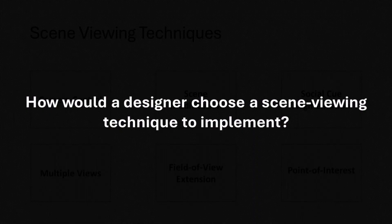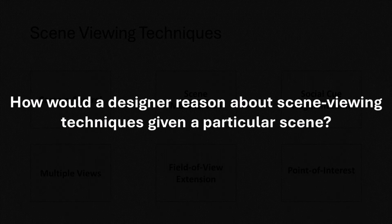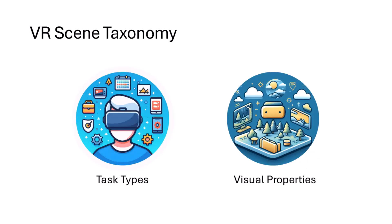However, despite the abundance of scene viewing technique research, the question remains: how would a designer choose a scene viewing technique to implement? And more generally, how would a designer reason about scene viewing techniques given a particular scene? To facilitate the selection of appropriate scene viewing techniques, we devised a scene taxonomy derived from insights into cognitive psychology and computer vision on how people and computers define, view, and describe virtual and physical scenes.